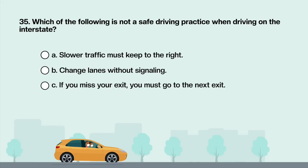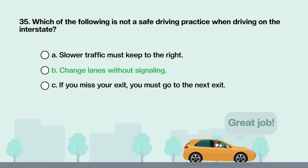Which of the following is not a safe driving practice when driving on the interstate? A. Slower traffic must keep to the right. B. Change lanes without signaling. C. If you miss your exit, you must go to the next exit. Answer is B: Change lanes without signaling.